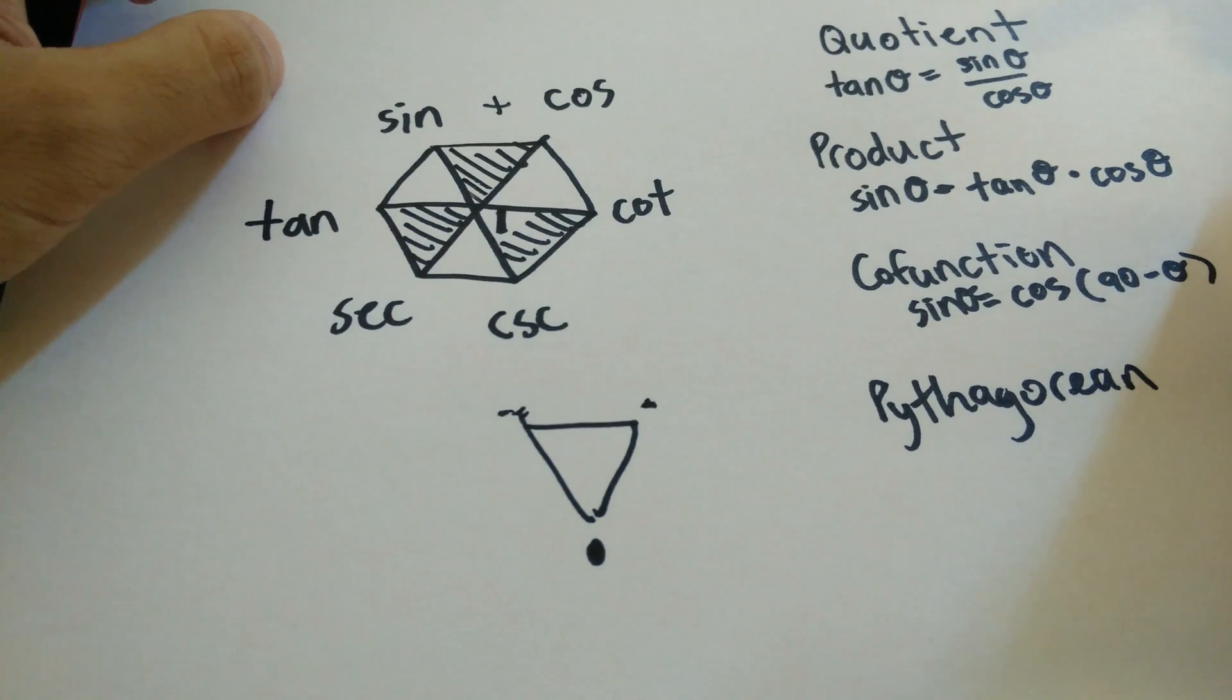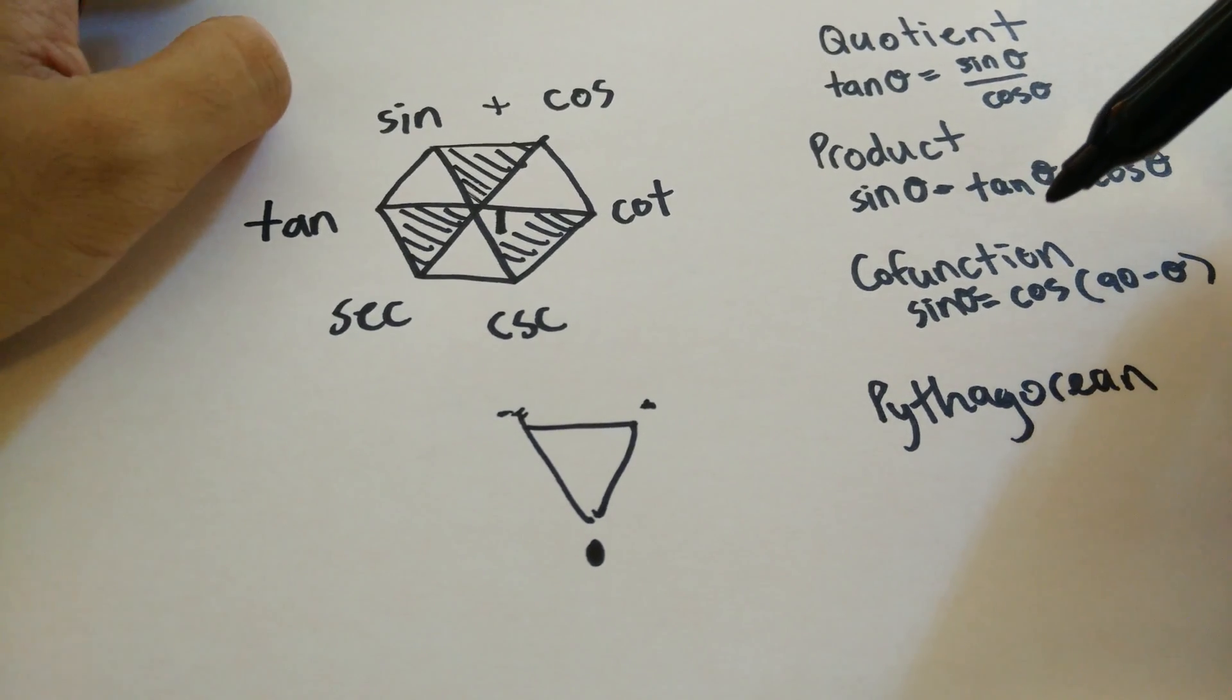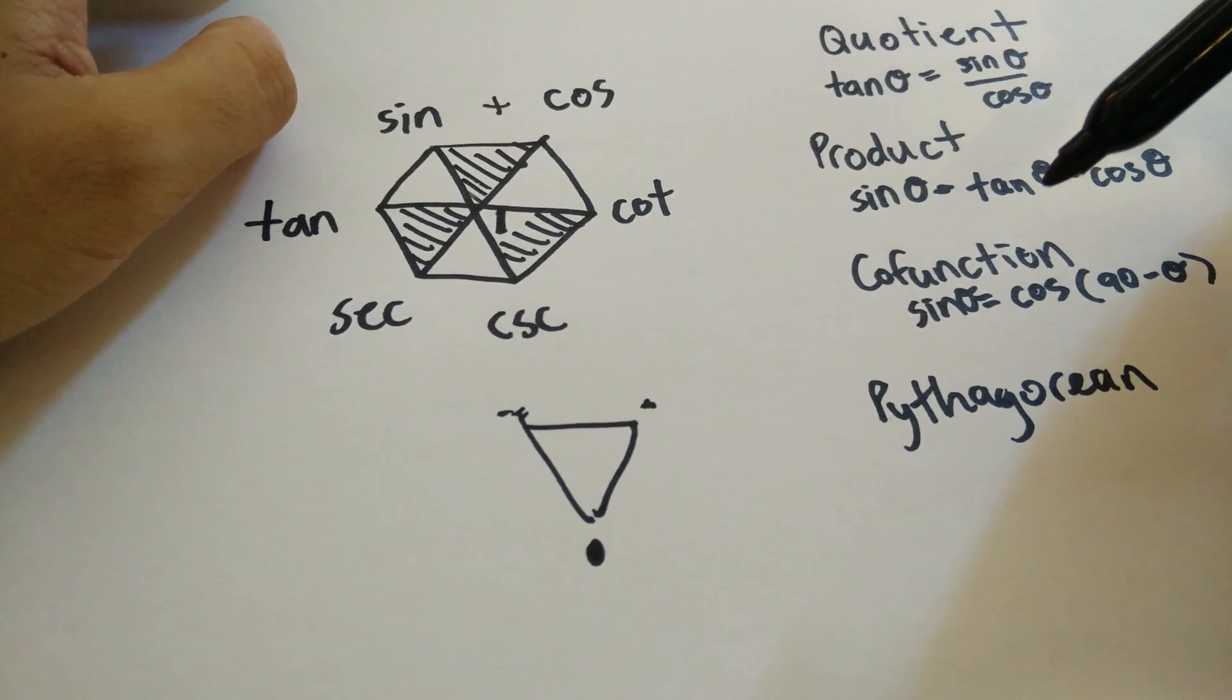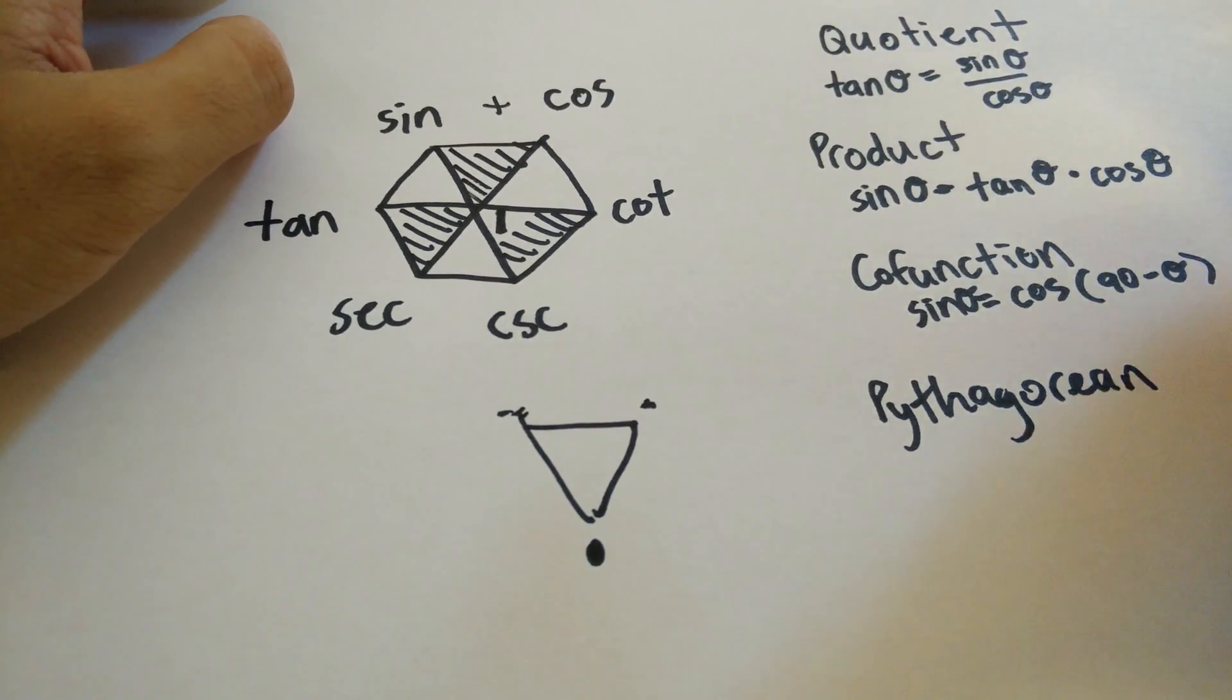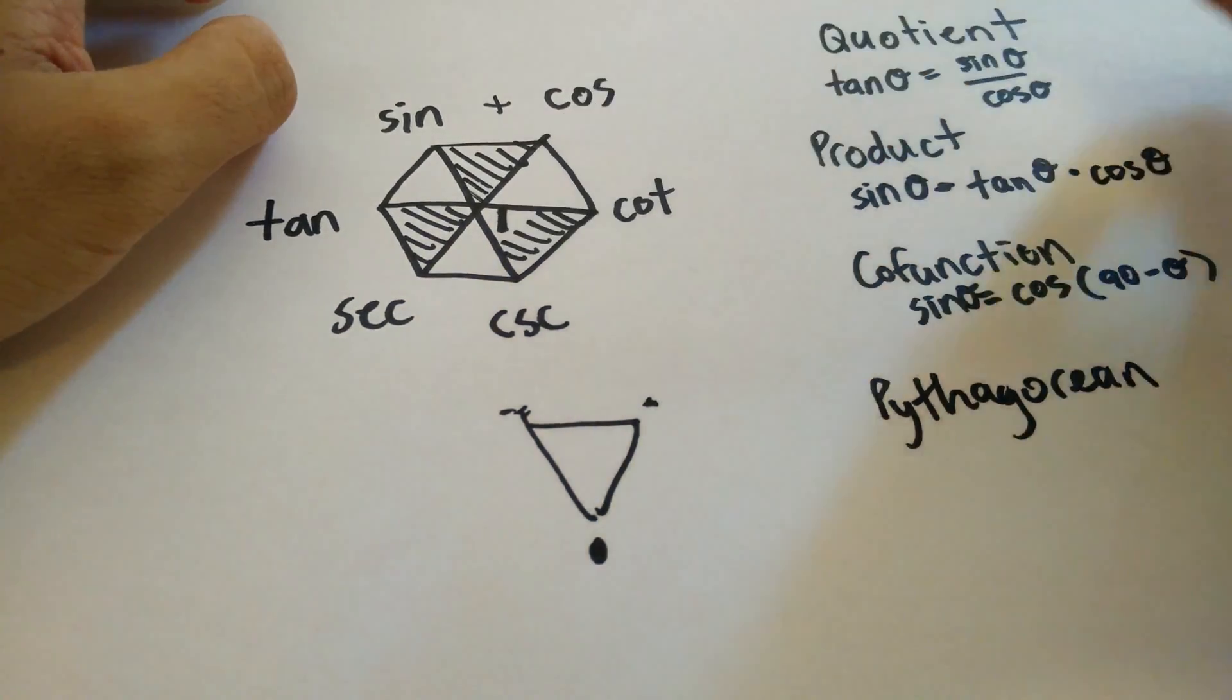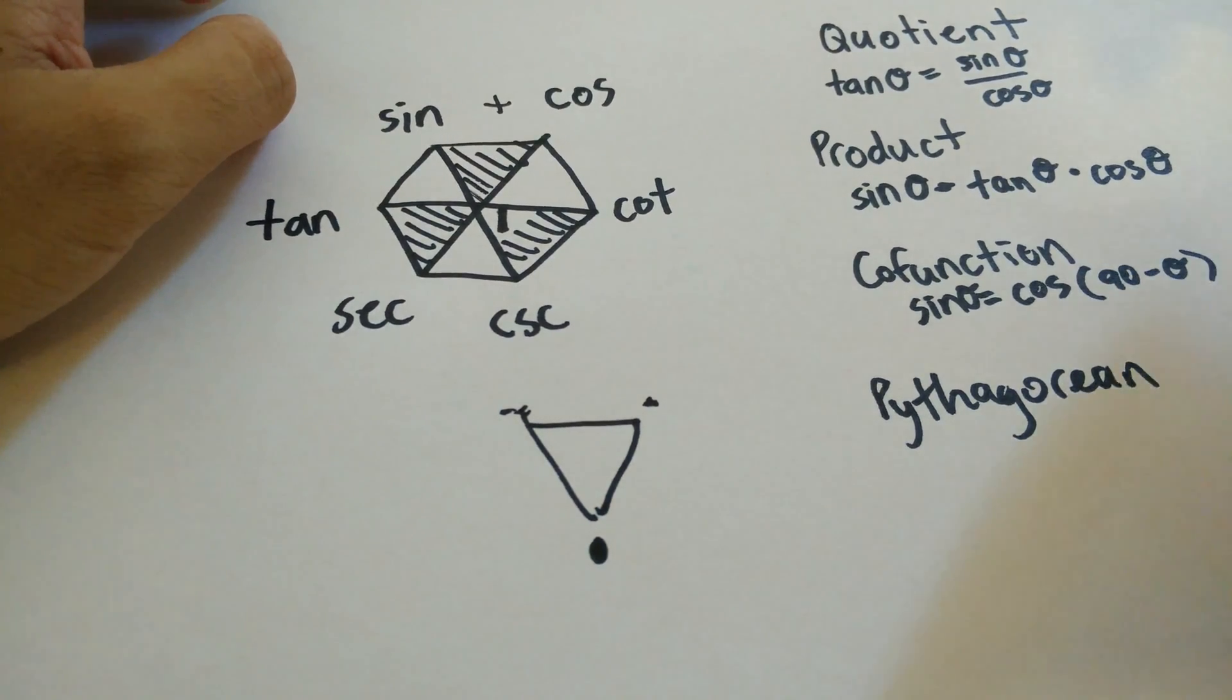These, again, are probably the hardest to remember out of these. But this will definitely help you on quizzes, tests, anything in precalculus, basically. If you draw this down right before or when the test is passed out, you jot this down real quick. You shouldn't mess up any of these four identities.